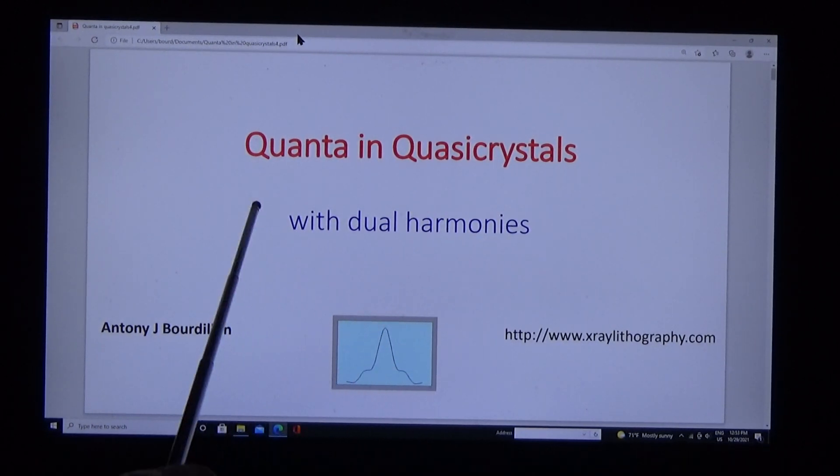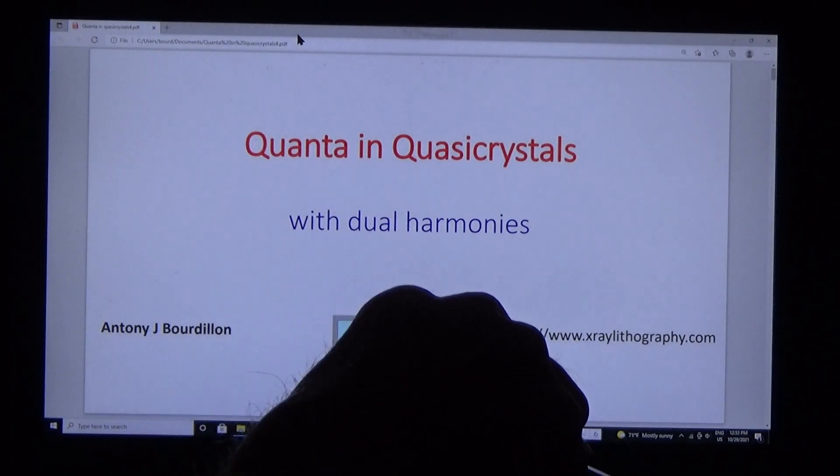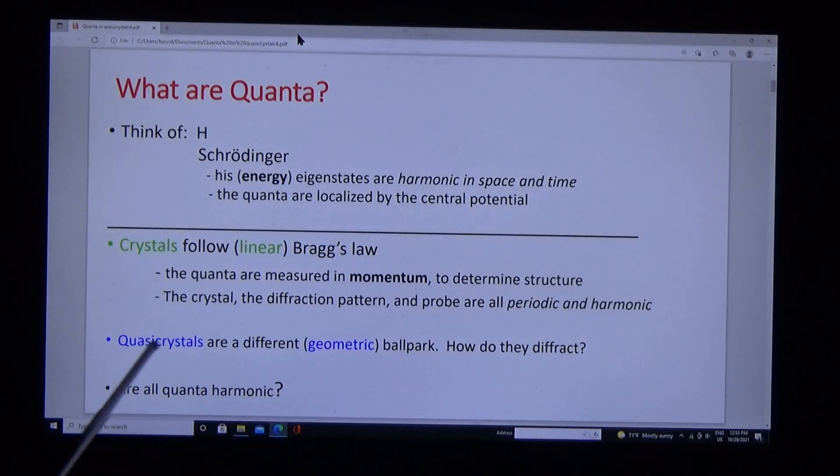Quanta and quasi-crystals with dual harmonics. Think of the hydrogen atom, think of Schrodinger. His eigenstates are harmonic in space and time. The quanta are localized by a central potential.